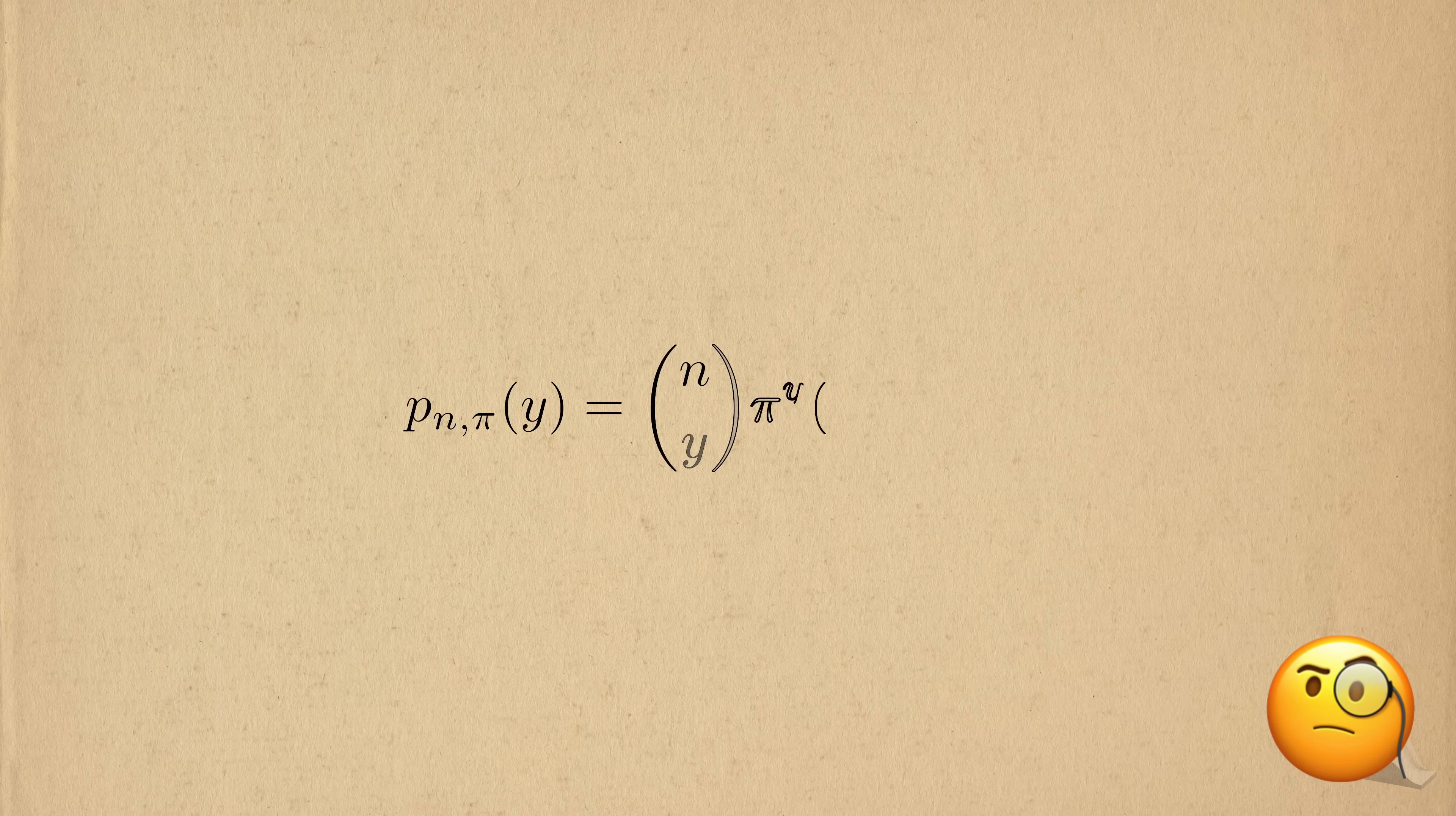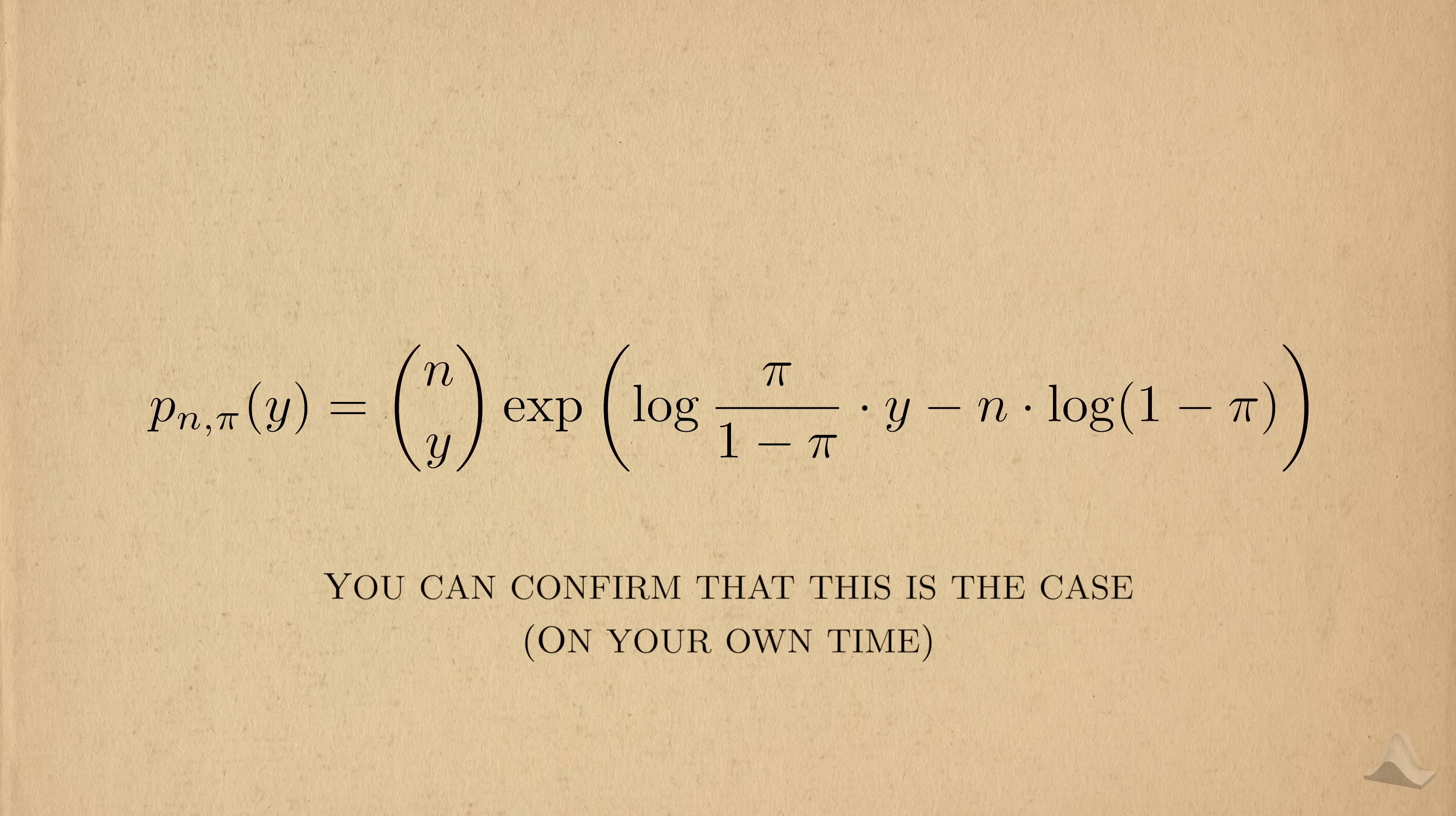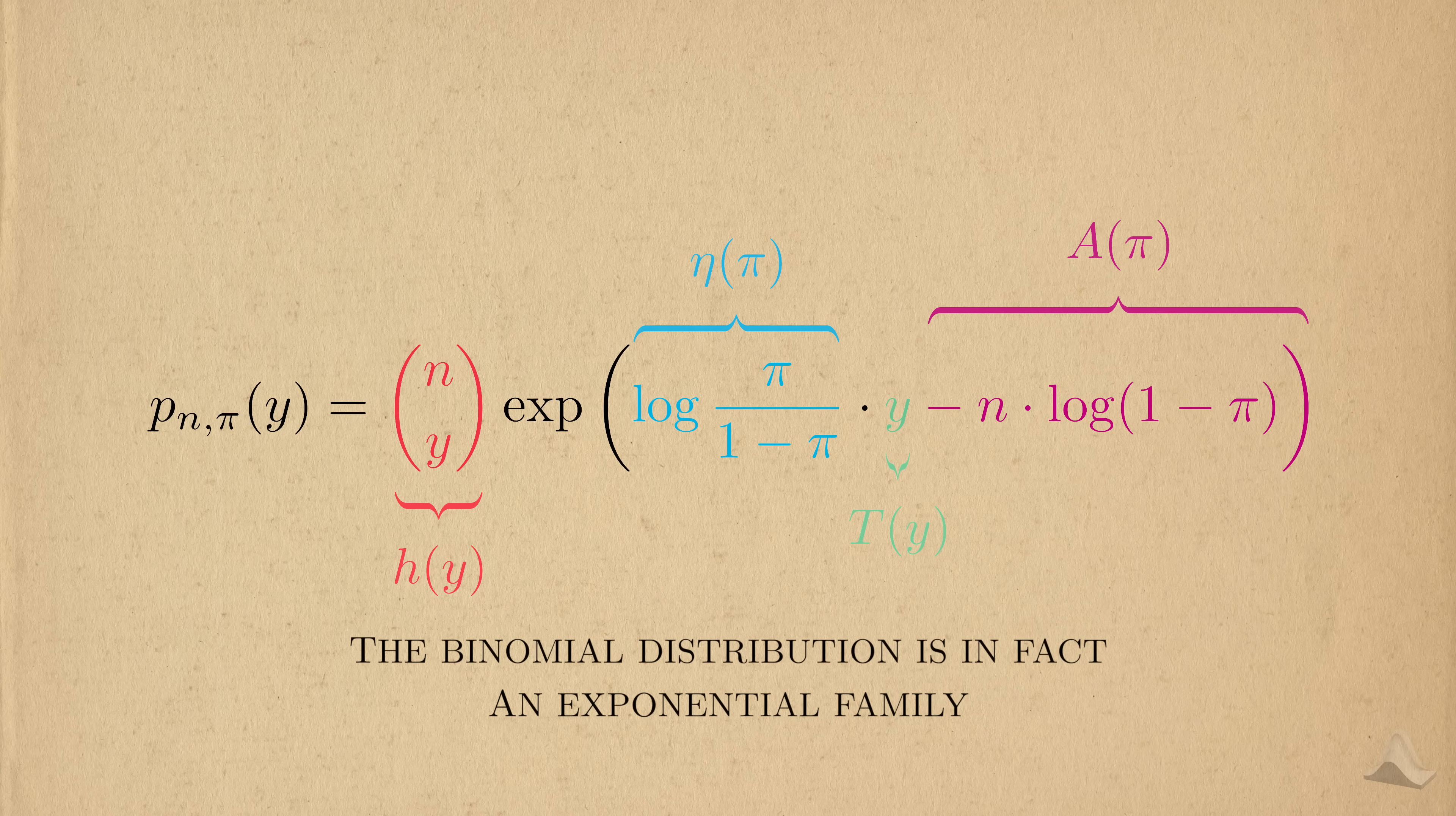But you might wonder, this is the binomial distribution I learned in school, and it doesn't look anything like an exponential family. But with some mathematical manipulation, you can give it the form you would expect from one. You can pause the video to confirm this on your own time if you'd like. Based on this equivalent expression of the binomial distribution, you can see the elements of the exponential family. We have to assume that the number of trials n is fixed, but this is an assumption we typically make. Therefore, the binomial distribution is in fact an exponential family.